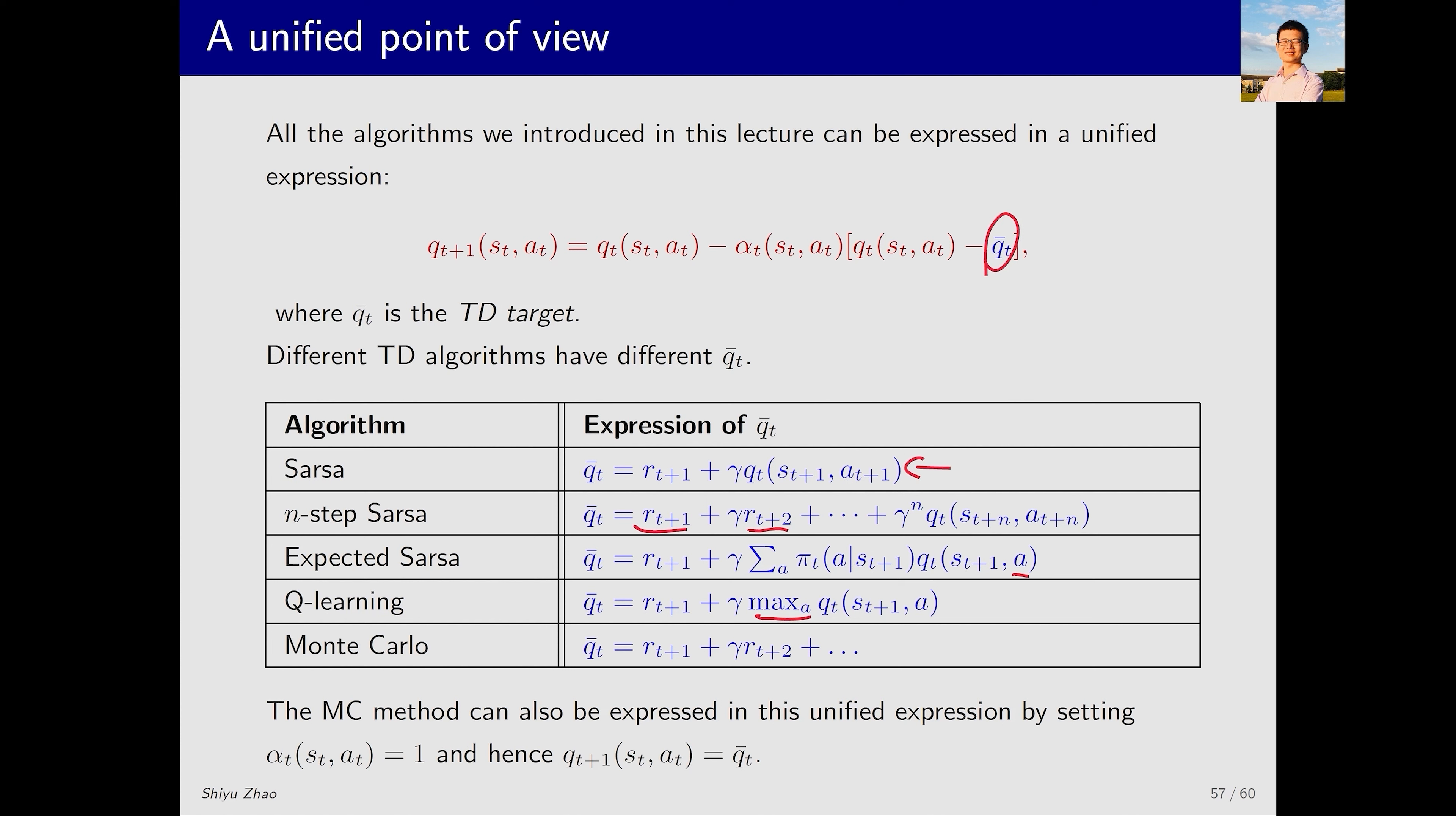Actually, the Monte Carlo method can also be expressed using a similar equation. What is its TD target in this case? It is R_{T+1} plus gamma R_{T+2} continuing until the end. Eventually, there is no Q_T and it's all immediate rewards. So, this can be seen as a special case of n-step SARSA. If you want to express the Monte Carlo method in this form, we can actually set alpha_T to 1, then this term can be omitted. Then here, Q_T minus Q_T cancels out. So, the final Q_{T+1} is equal to Q̄_T. All these algorithms can be written in this unified form.